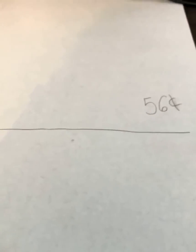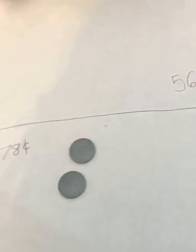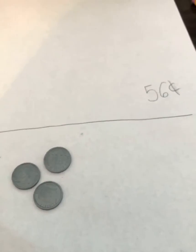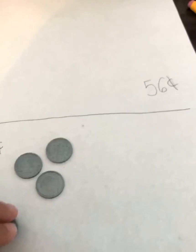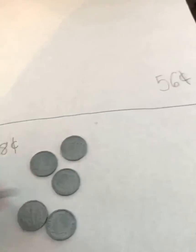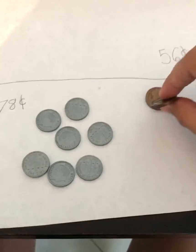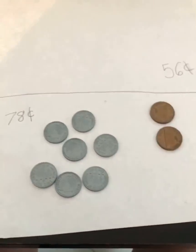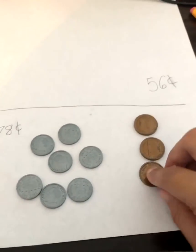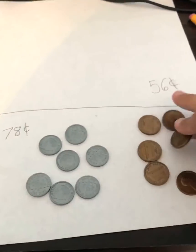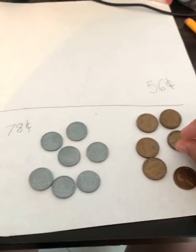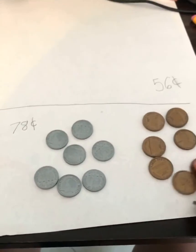Now let's try this with only dimes and pennies just like we did before. 10, 20, 30, 40, 50, 60, 70, 71, 72, 73, 74, 75, 76, 77, 78.